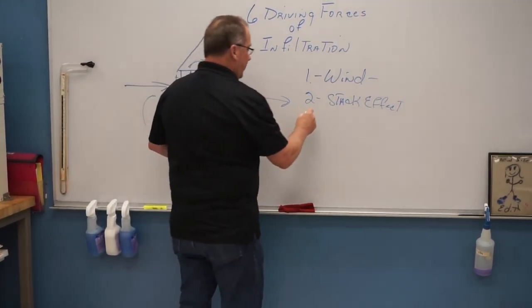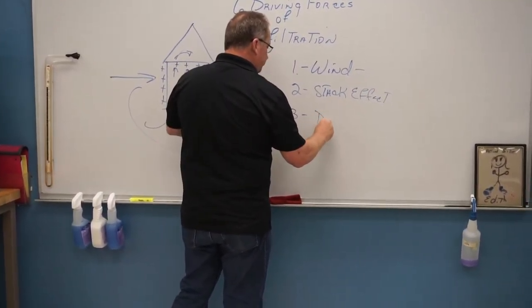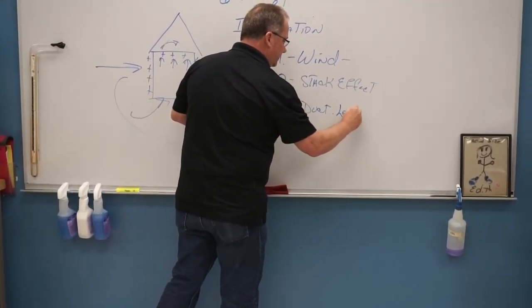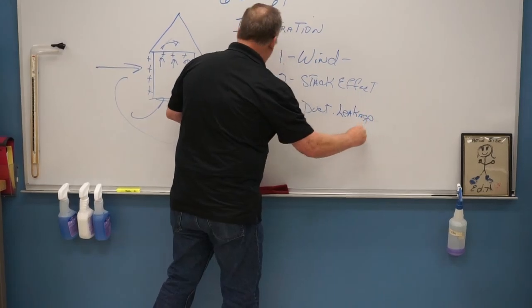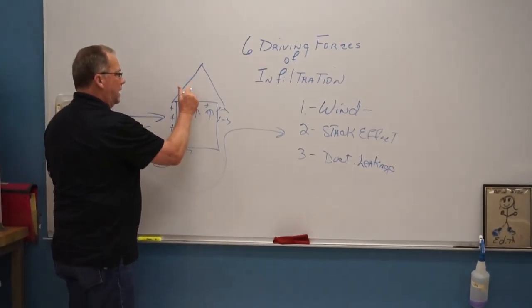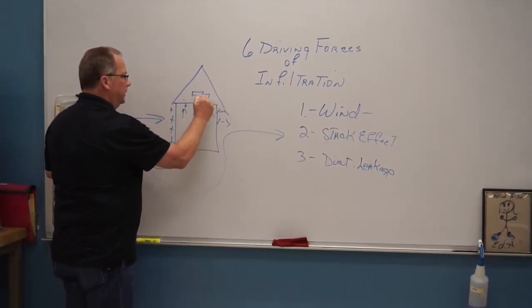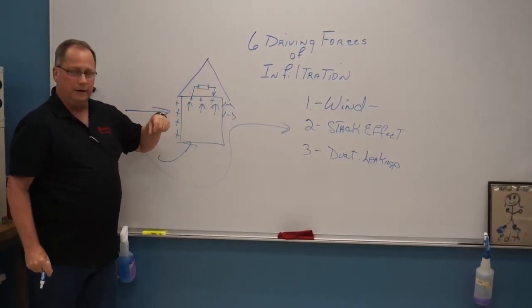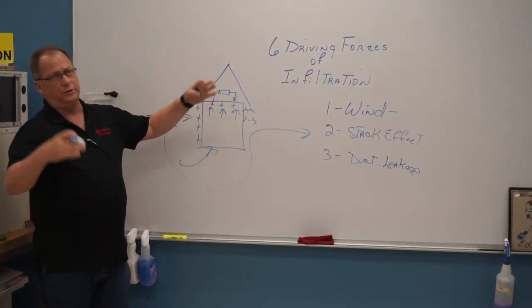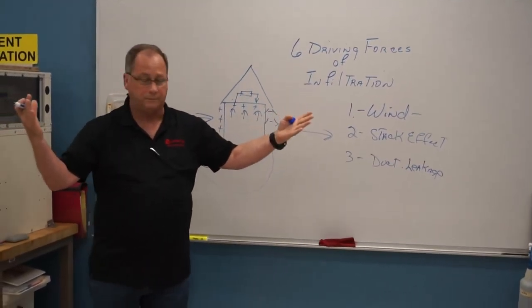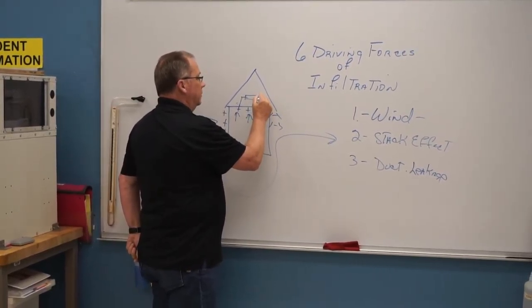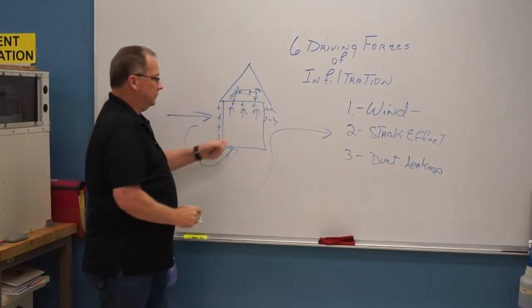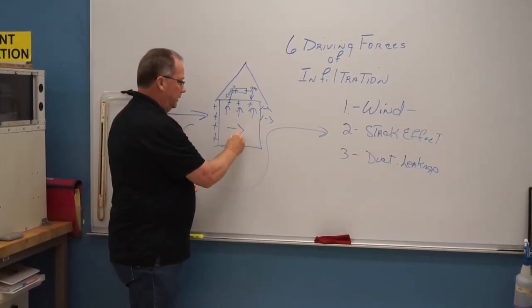So those are two naturals right there. Third thing is duct leakage that creates infiltration. So if we have duct that's up here on the top, we're supposed to be putting in the same amount of air that we're sucking out, going through our air conditioning system. And to give you an example, if our supply leaks, let's just use 1,000 CFM - 1,000 CFM of airflow - and we're only putting in 900 to the house but we're still sucking out 1,000, that means the house is going, at that point in time, into a negative.